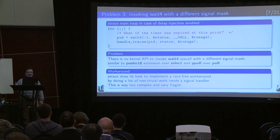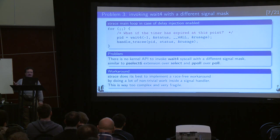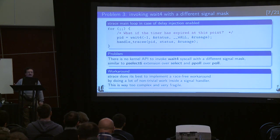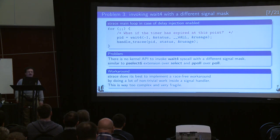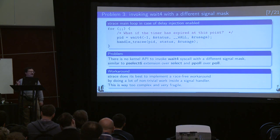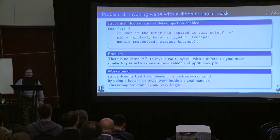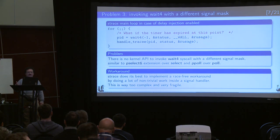There is no way to ensure that the signal doesn't arrive immediately before the invocation of a wait-family syscall. So now we have a problem. There is no syscall that would be useful in this case. What we did was implement a very ugly workaround, because we actually do a lot of work inside the signal handler, which is not something you really want to do. You would rather do as little as possible in the signal handler. We have to do a lot of non-trivial work, and I'm very uncomfortable about this. It's really not just complex - it's fragile, because the code running inside the signal handler might change because of side effects of other code that we don't see.